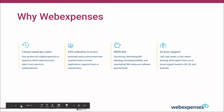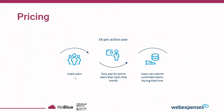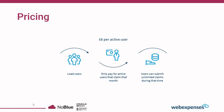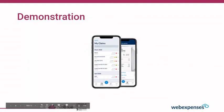Pricing is straightforward — it works on an active user model at a flat £6 per active user per month. You can load all your employees into Web Expenses, but you only pay for those actively submitting or approving a claim in that month. Once active, users can submit or approve an unlimited amount of claims for no additional cost. Implementation fees range from roughly £500 to £1,500 — it's by no means an HR or ERP-sized project, it's very low-touch and takes two to four weeks.